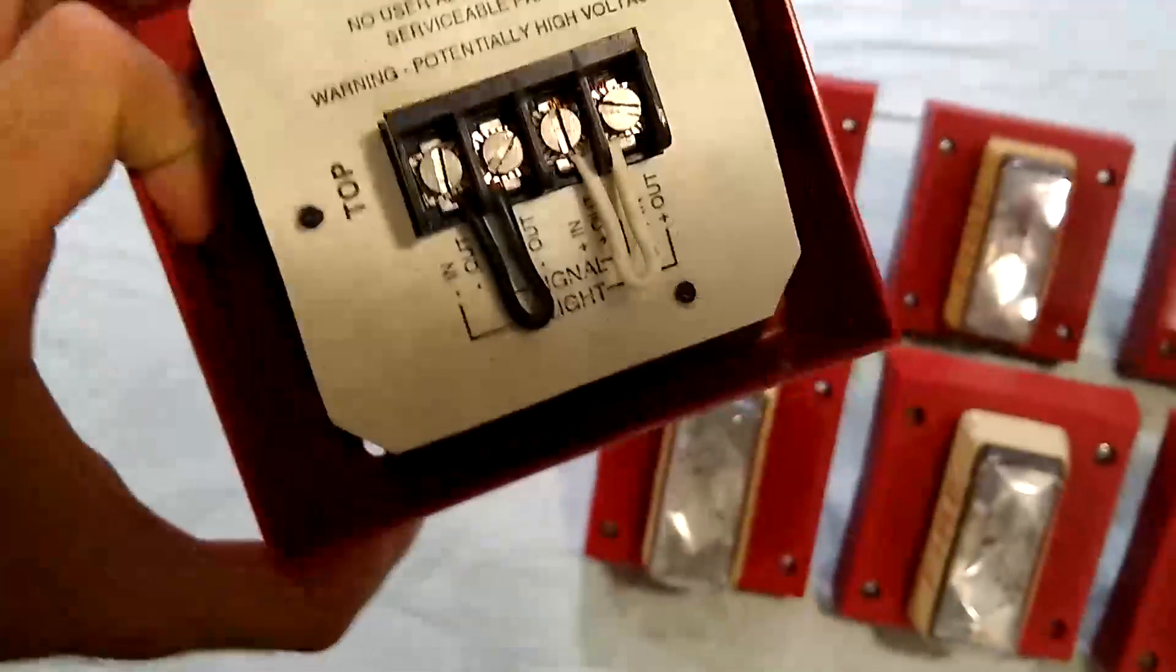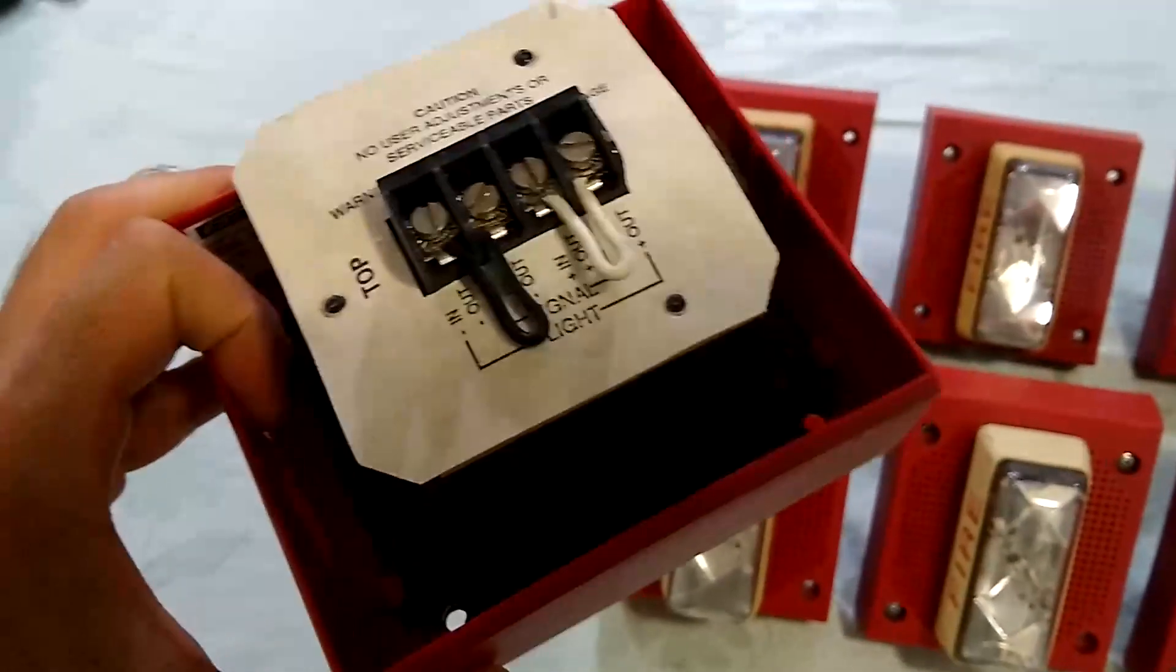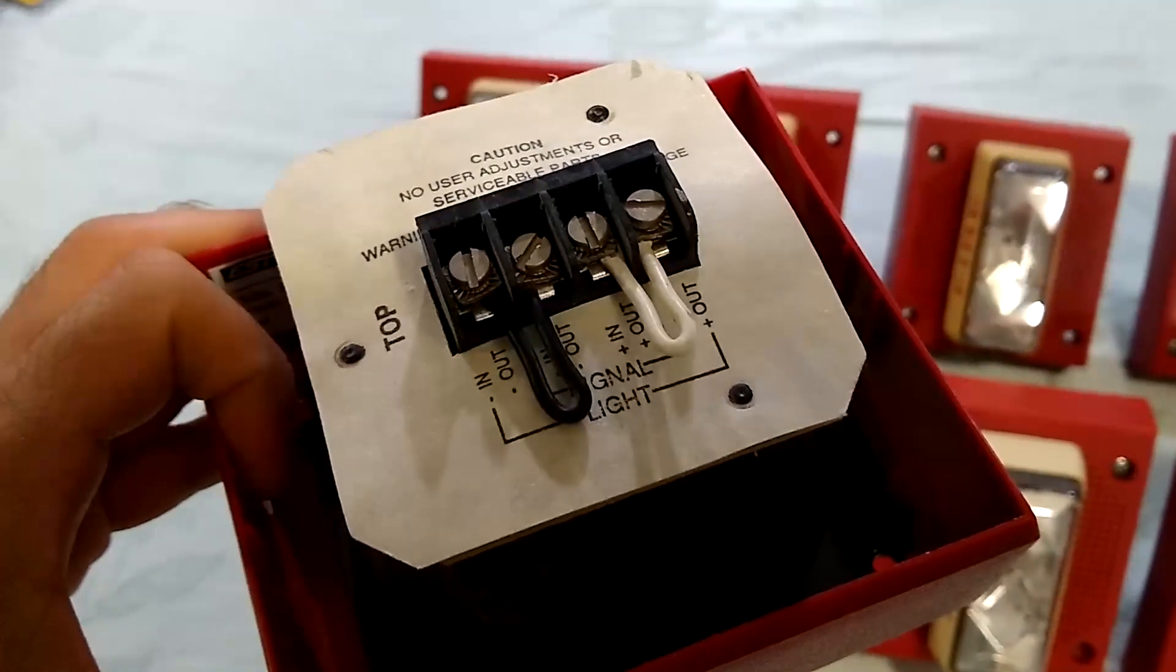Now these are four-wire horn strobes, but as you can see here, some of them came with jumper wires to allow for two-wire operation.